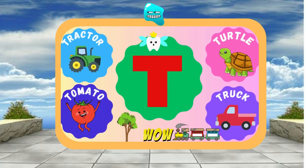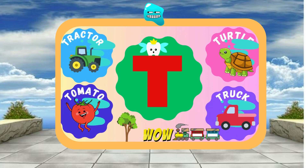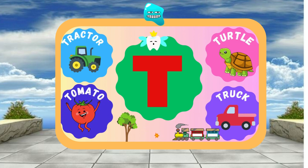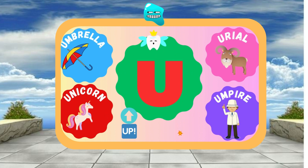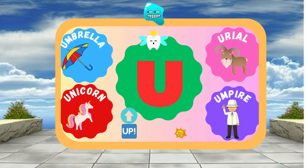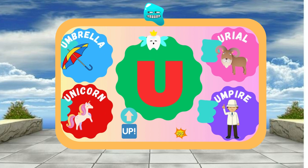T is for Tree — T, t, Tree. T is for Train — T, t, Train. U is for Umbrella — U, u, Umbrella. U is for Up — U, u, Up.